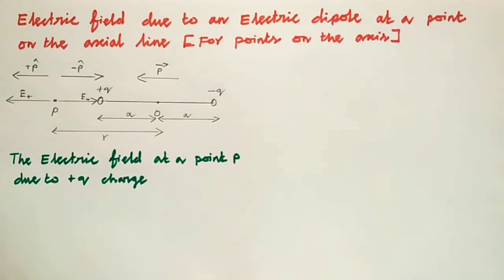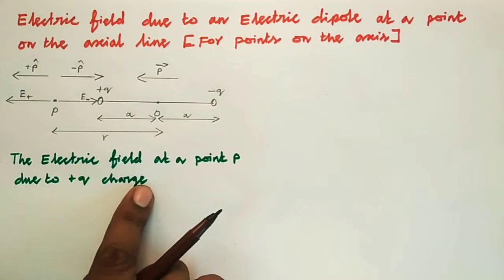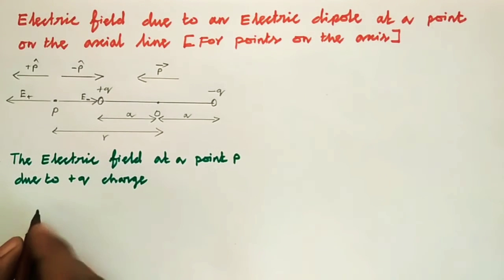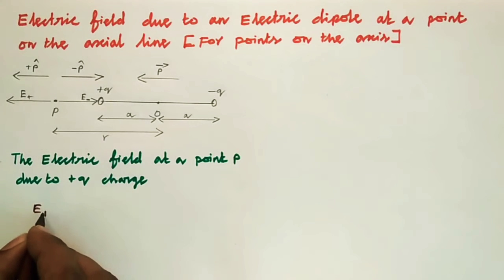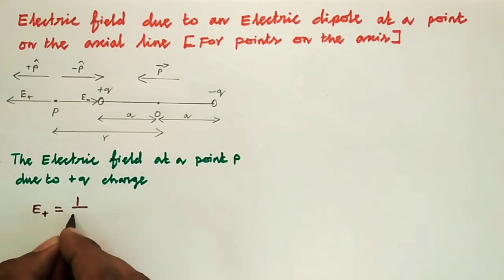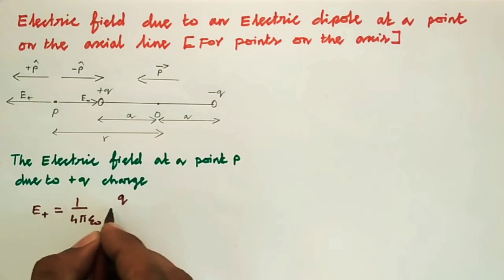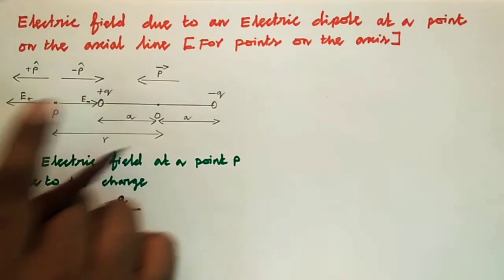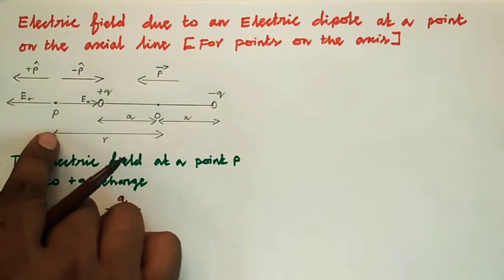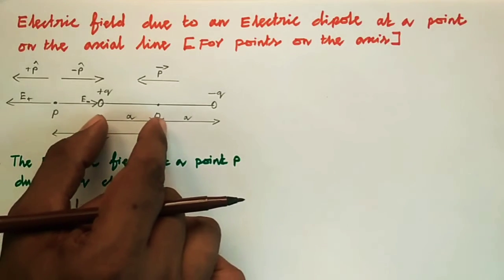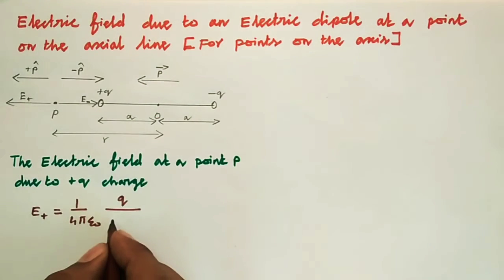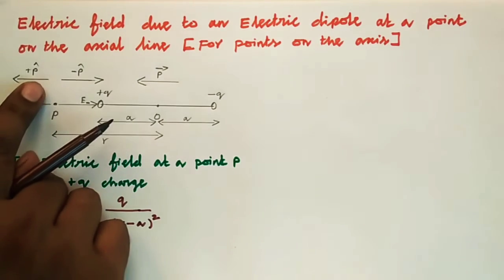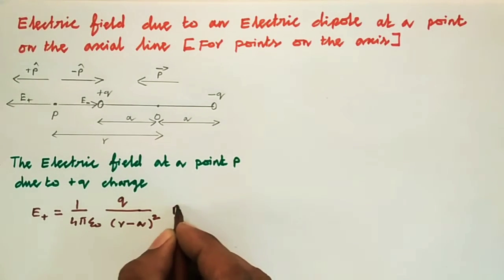The electric field at point P due to the positive charge is written as E-plus equal to 1 by 4 pi epsilon-naught times Q by (R minus A) whole square. The distance from point P to the positive charge is R minus A. The direction is positive, indicated by P-cap.